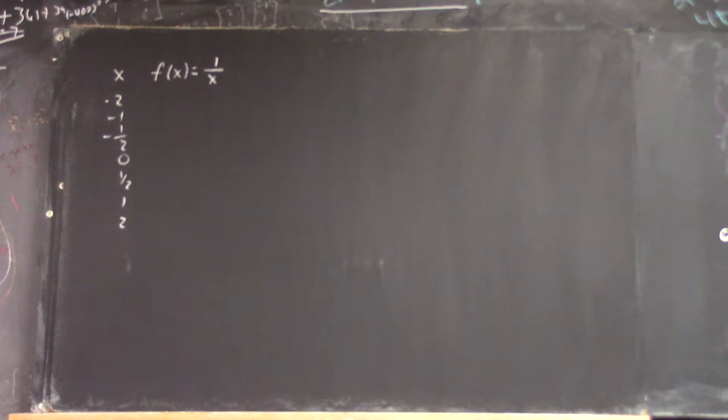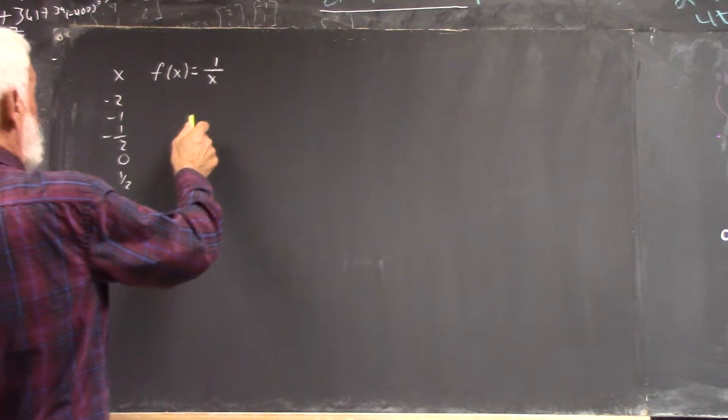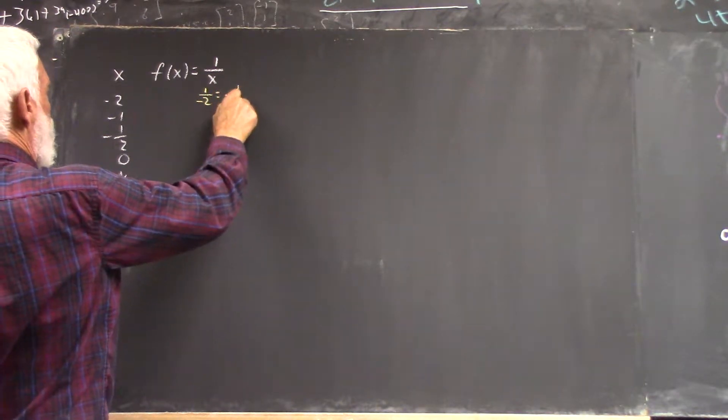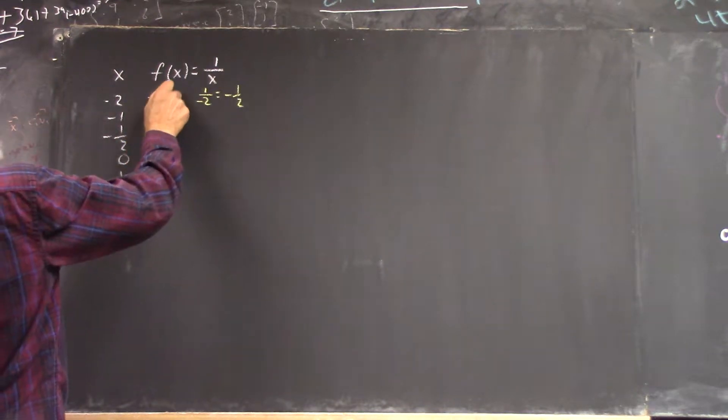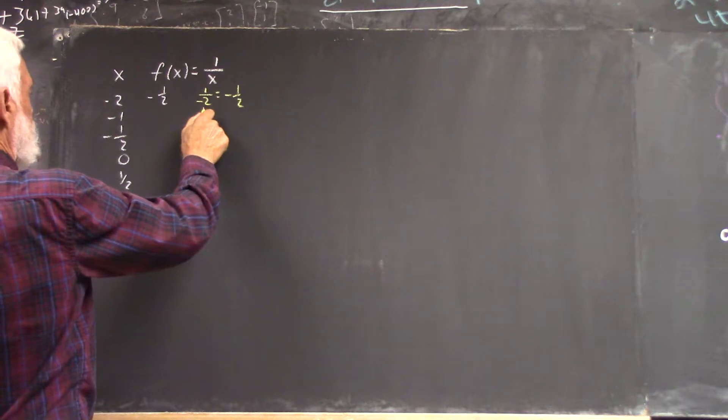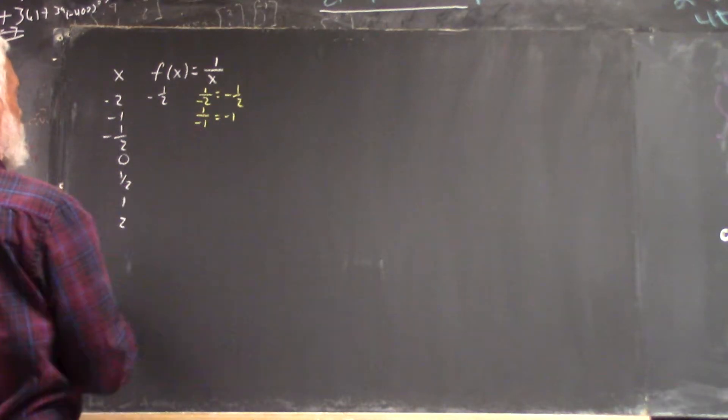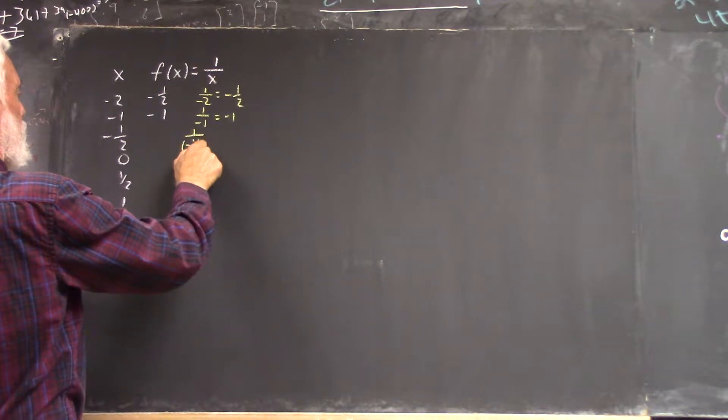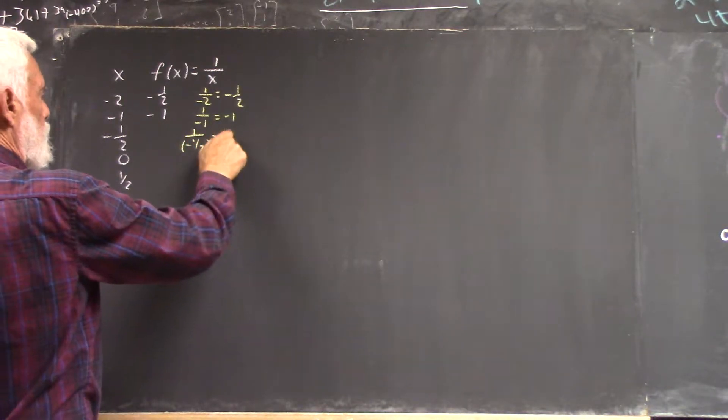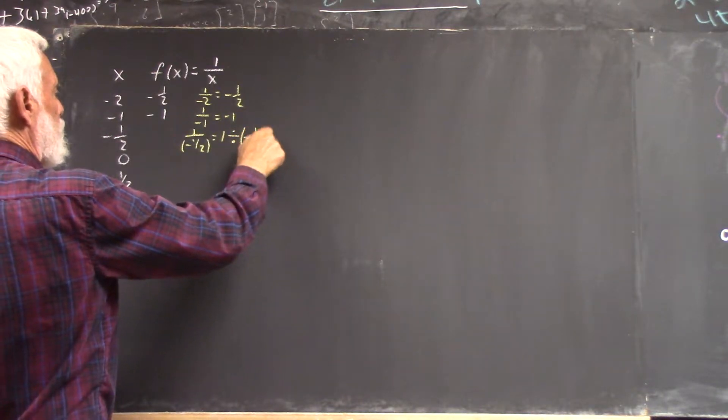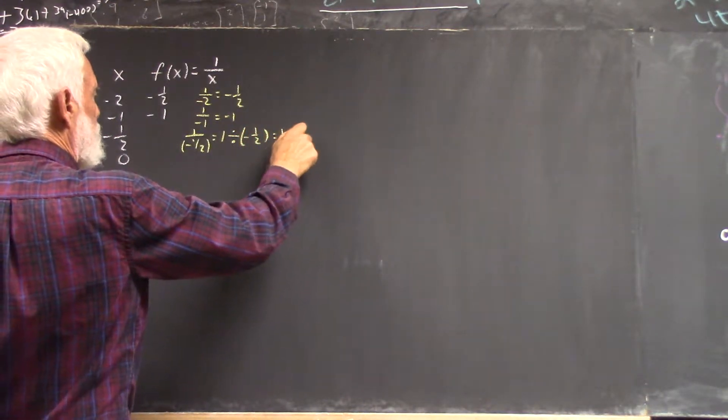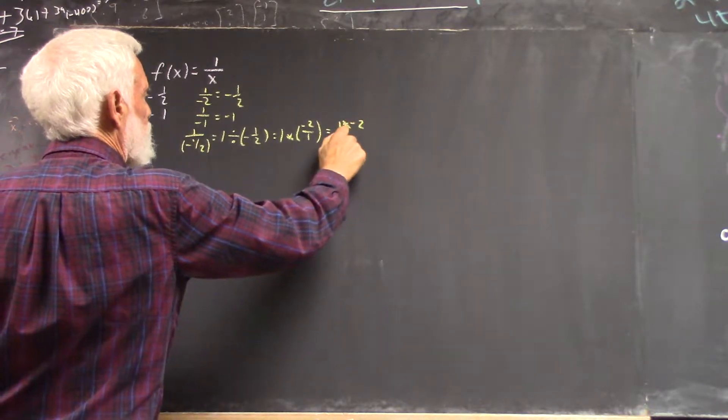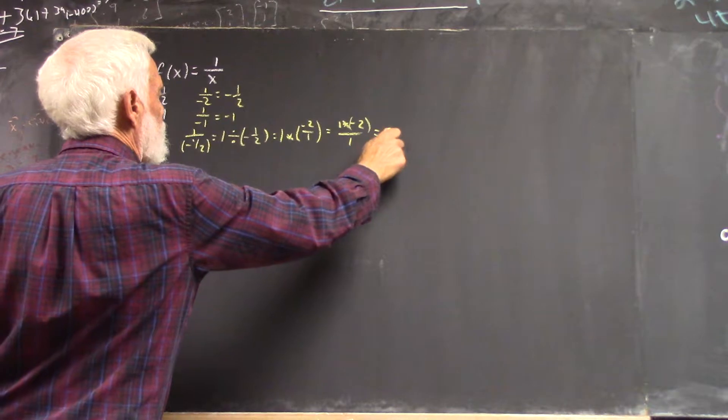Same values. We're going to do 1 over x. 1 over negative 2 is negative 1 half, so we get negative 1 half. 1 over negative 1 is negative 1, so we get negative 1. 1 over negative 1 half is 1 divided by negative 1 half is 1 times negative 2 over 1 equals 1 times negative 2 over 1, which is negative 2.